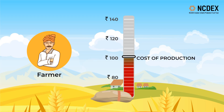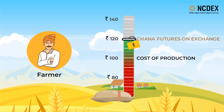Let's understand with an example. The farmer's total cost to produce one bag of chana (Bengal gram) is 100 rupees. Chana futures contracts on the exchange, expiring around harvest time, are currently trading at 120 rupees per bag. So he sells chana futures at 120 rupees, meaning on a specific future date he will send the bag of chana to the exchange and receive 120 rupees for it. By doing so, he is assured a profit of 20 rupees.